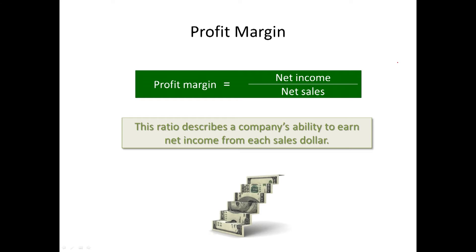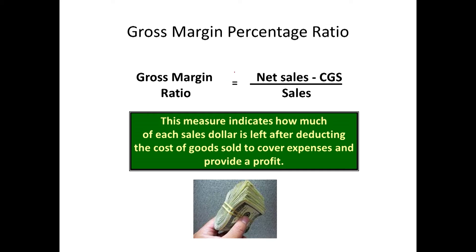Profit margin is calculated by taking net income divided by net sales, and this describes how much of each sales dollar is actually going towards net income. We also talked about gross margin ratio, which is calculated by taking the gross margin divided by sales. Remember: gross margin and gross profit are the same thing, calculated as net sales minus cost of goods sold. These two ratios — gross margin and profit margin — are the ones we analyze over time. If they are getting less over time, that margin erosion can be a real problem.